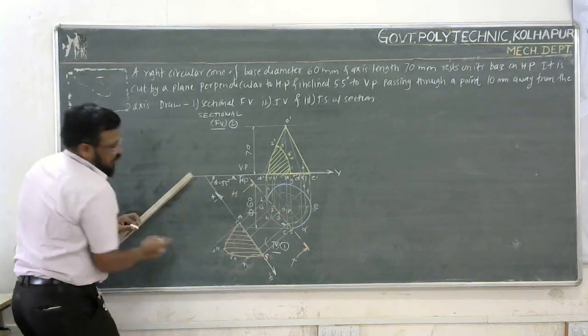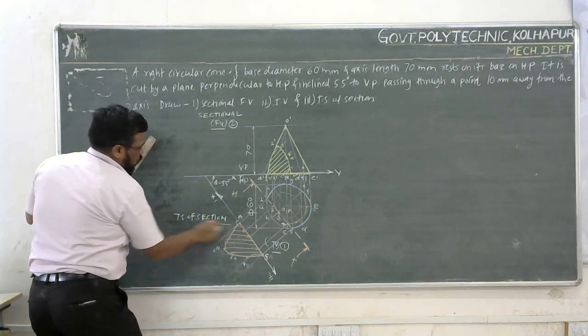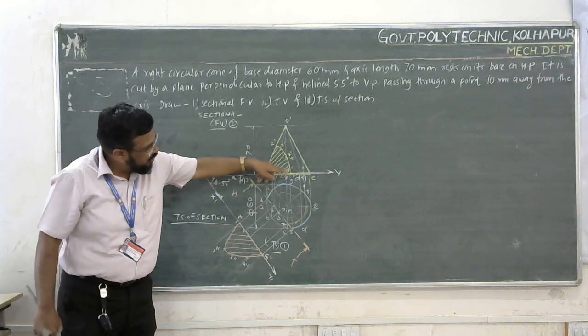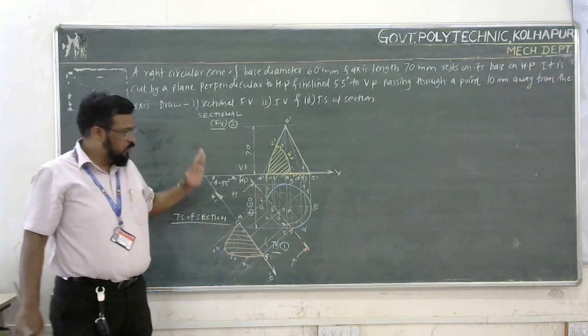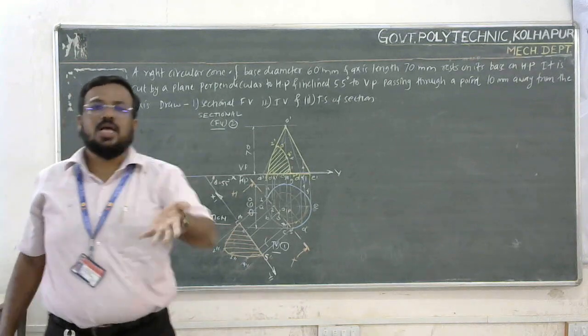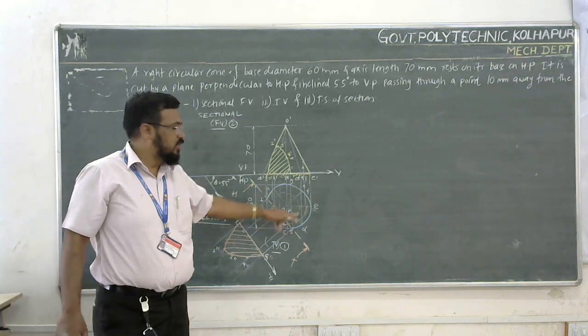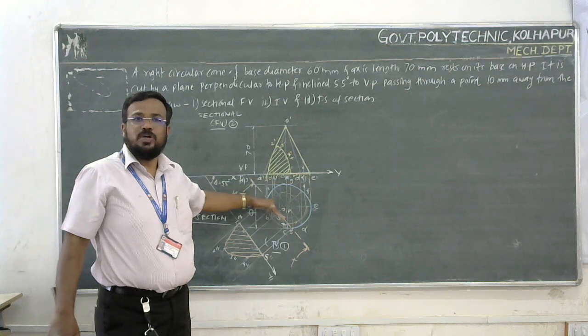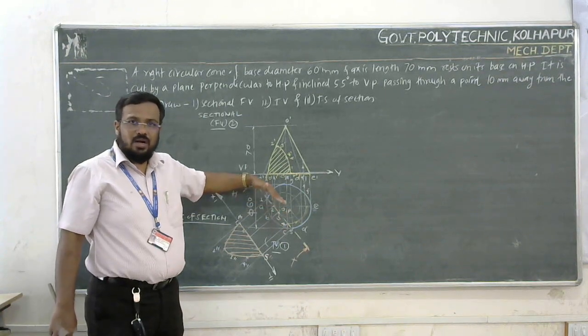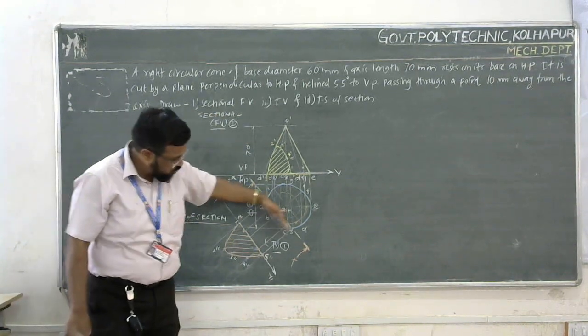Here we have two shapes of sections. This is the sectional front view. When the cutting plane is inclined and passes through the axis at a certain distance, we get this type of representation - a front view section showing two shapes of sections obtained from the inclined cutting plane.